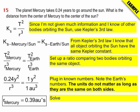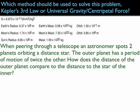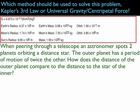Alright, here's another thing. Now, this little table that's up here is on your handout. It's a little workbook that we've given you. So, that's the table here in the red box. When peering through a telescope, an astronomer spots two planets orbiting a distant star. The outer planet has a period of motion twice the other. How does the distance to the outer planet compare to the distance to the star of the inner planet? So, we're looking at somehow comparing the two distances. So, I'm going to use Kepler's third law, because I don't know the mass of the Sun or any other information, but I have two satellites orbiting one body.